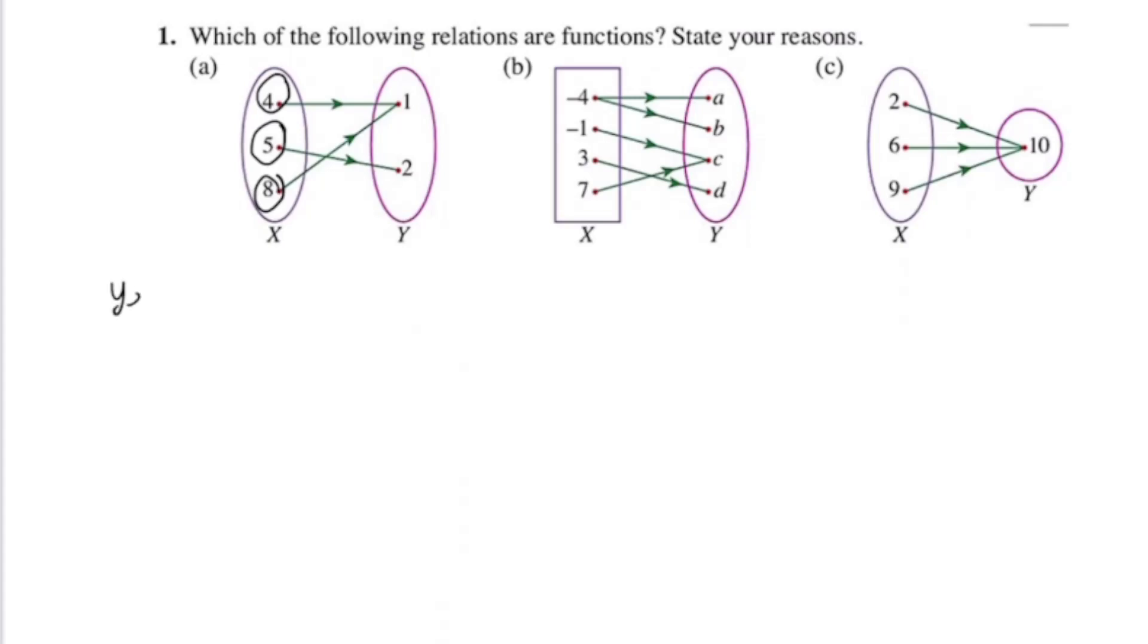So is this a function? Yes. What is the reason? Every object has exactly, or you can say, only one image. Okay, second one. Let's look at negative 4. Negative 4 has two images, so it doesn't fulfill the condition for function.